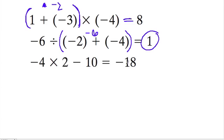And last, we want to get negative 18. So what can we do? Well, if I put brackets here, does this work? Negative 4 times 2 is negative 8. And negative 8 minus 10 is negative 18. Oh, well, that worked too.